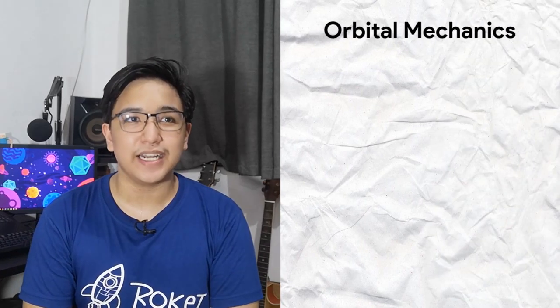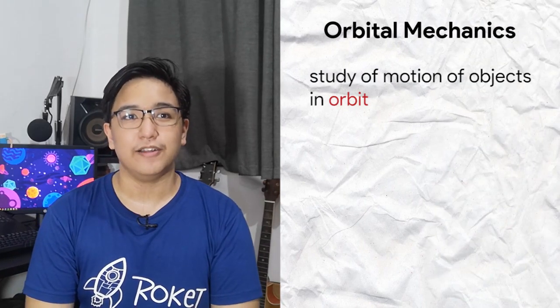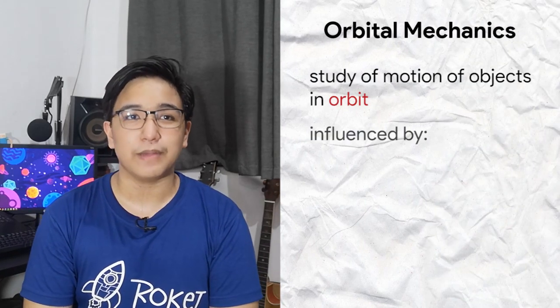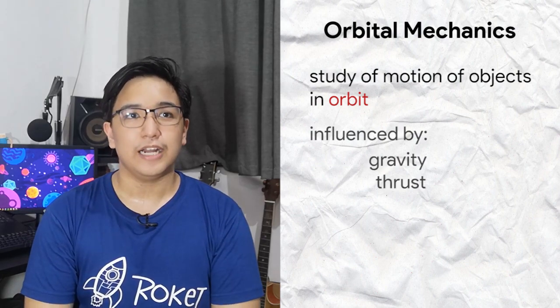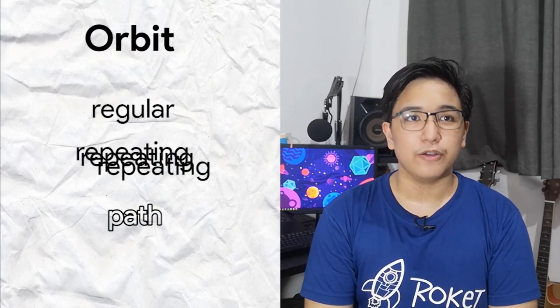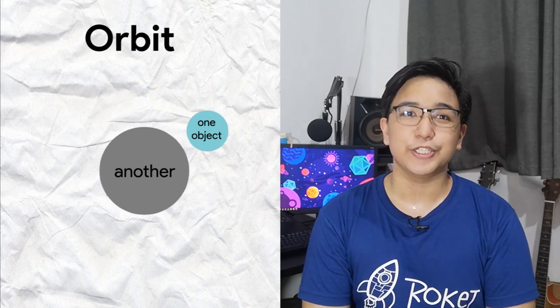Orbital mechanics is the study of the motion of objects in orbit around celestial bodies as influenced by forces such as gravity and thrust. An orbit refers to a regular repeating path one object takes around another. They stay in orbit due to gravity. But how does that work? Isn't gravity supposed to pull things down?